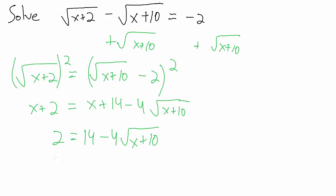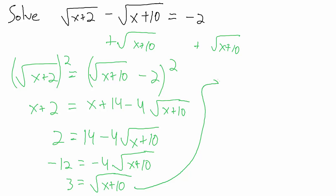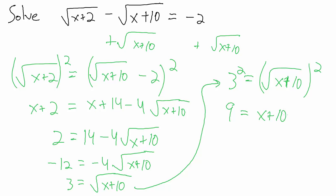Subtract 14 from both sides: 2 minus 14 is negative 12, so negative 12 equals negative 4 times the square root of x plus 10. We can simplify before squaring — divide both sides by negative 4. On the left, negative 12 divided by negative 4 is positive 3. On the right we just have the square root of x plus 10. Squaring both sides: 3 squared is 9, and the square root of x plus 10 squared is x plus 10. Subtracting 10 from both sides gives x equals negative 1.